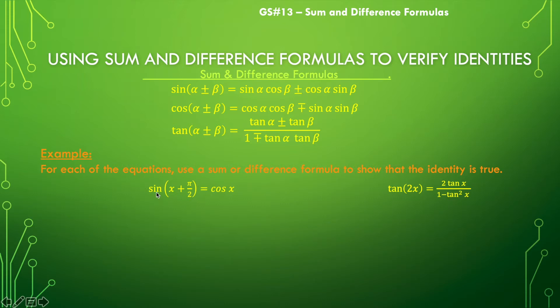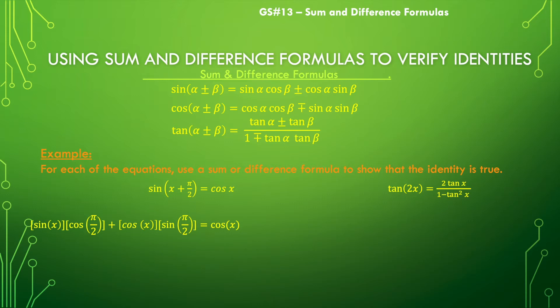Expanding gives us the sine of x times the cosine of pi over 2, plus the cosine of x times the sine of pi over 2, and we leave the right-hand side as cosine of x. Now, looking at the left-hand side, I can't evaluate sine of x or cosine of x because they're variable expressions, but I can evaluate cosine and sine of pi over 2. So we replace cosine of pi over 2 with 0 and sine of pi over 2 with 1.